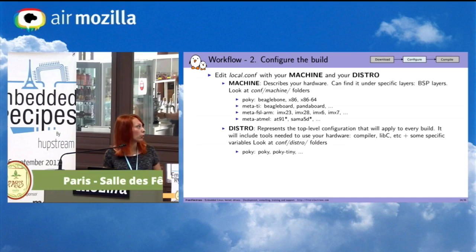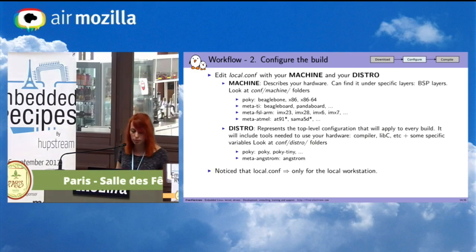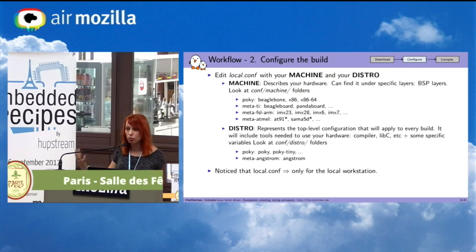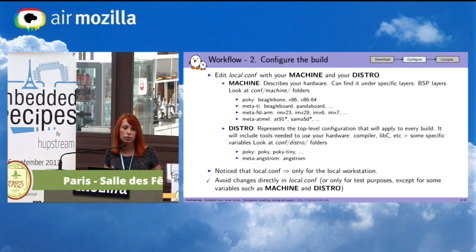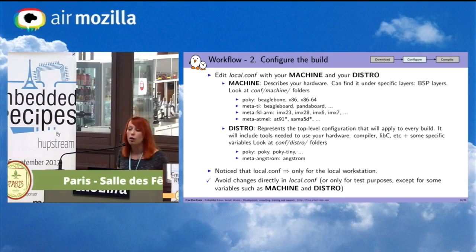You will find each distro in the conf/distro folder across the different layers. Some distros already exist: Poky provides a Poky distro, there is also Poky Tiny which is smaller, and for example the Angstrom layer provides the Angstrom distro. It's important to know that local.conf — as the filename indicates — is local to your workstation. If you have different users, you cannot share your local.conf. So a good practice is to avoid making changes directly in local.conf, as otherwise you break the reproducibility of the build system.